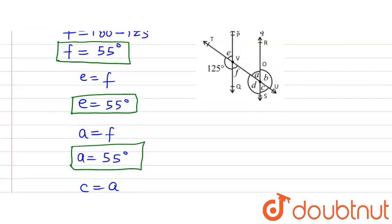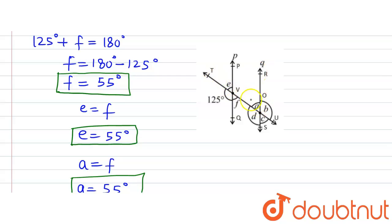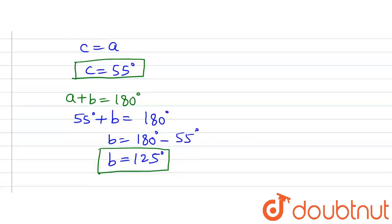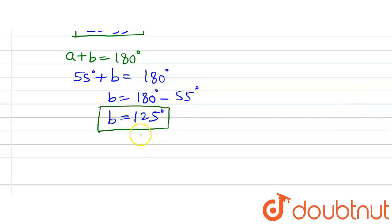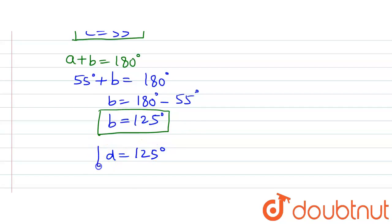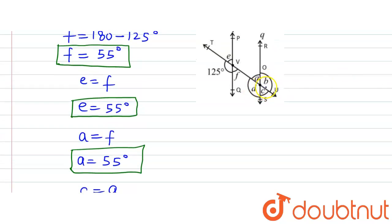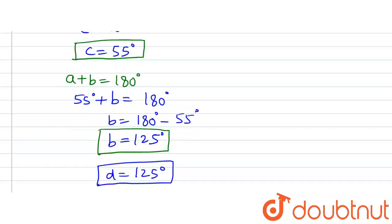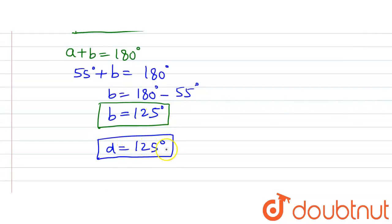Since P and Q are parallel lines and TU is a transversal, angle D will be equal to the given 125° angle because they are corresponding angles — corresponding angles on the same side of the transversal are equal, so angle D = 125°. Additionally, angle D and angle B are vertically opposite angles, and since angle B is 125°, angle D should also be 125 degrees, confirming the result.